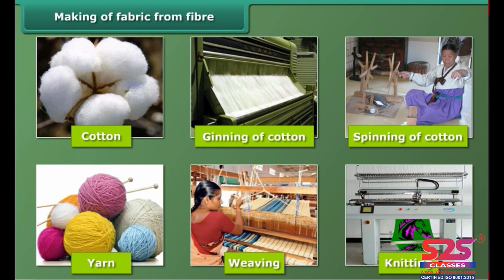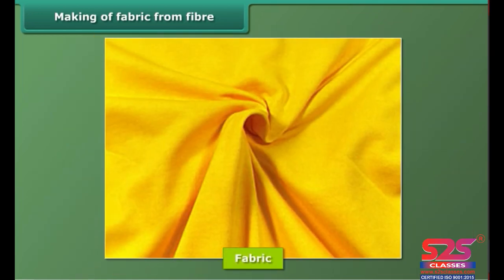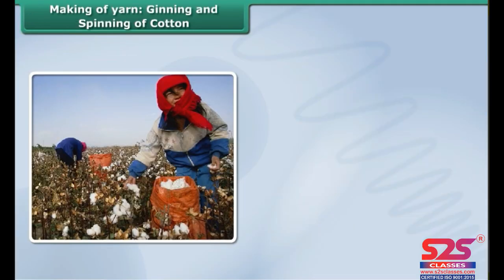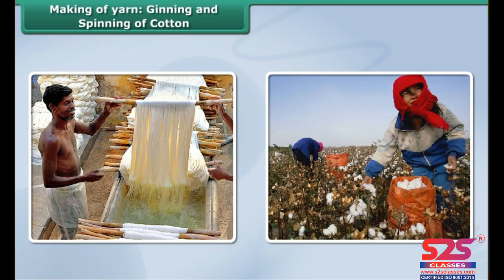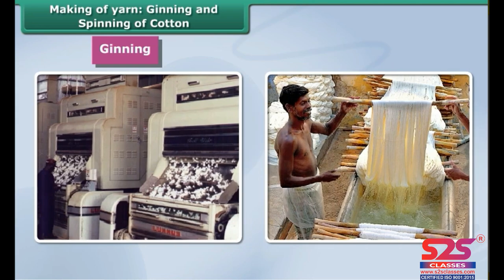How is fabric made from fiber? First, yarn is made from fiber, and then fabric is made from yarn. To make yarn, cotton is picked by hand from cotton bolls, and then the fiber from the seeds is separated by combing. This process is called ginning. Ginning can be done by machines too.